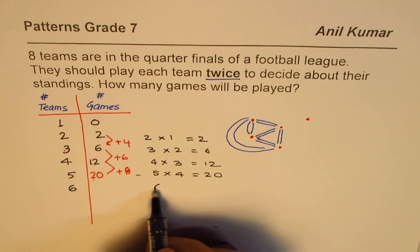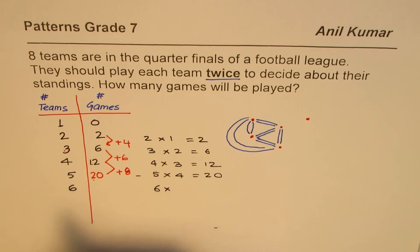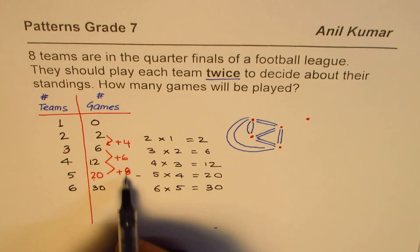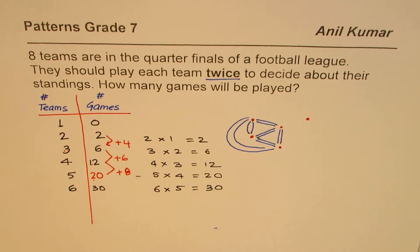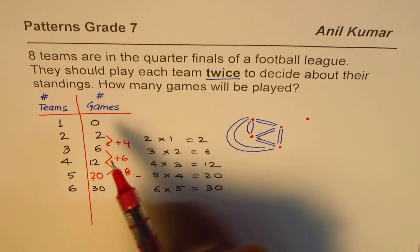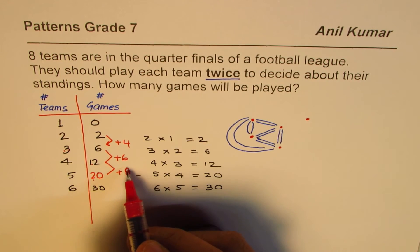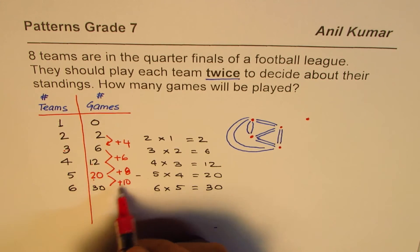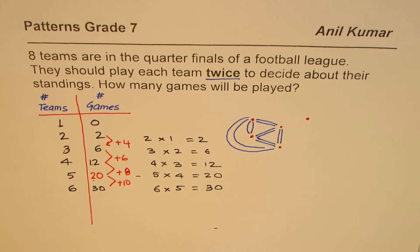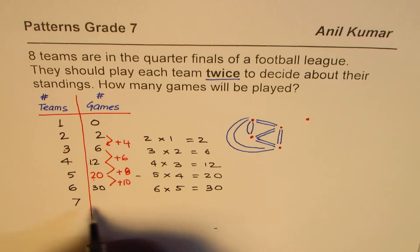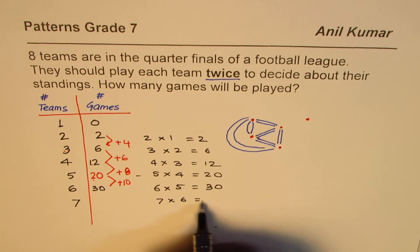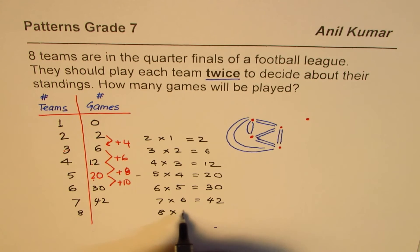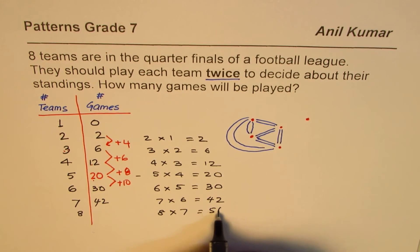If we follow this pattern, for six teams it should be six times five, which is thirty. And indeed, adding two more each time — adding ten — twenty plus ten is thirty. For seven teams: seven times six is forty-two. For eight teams: eight times seven is fifty-six games in all.